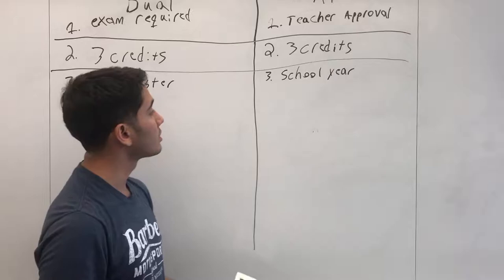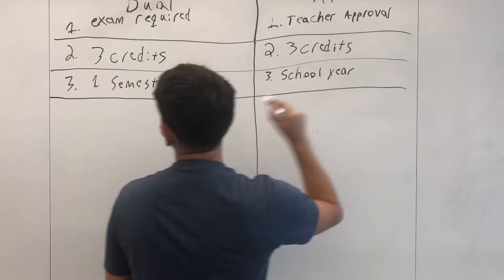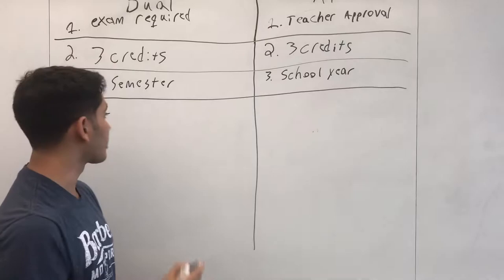Now the other one I wanted to touch on was what you need to even get credit for it. To get credit in dual enrollment it's super simple. All you have to do is pass the class. If you get a C plus or higher you're good to go. You got credit for it, you're good.